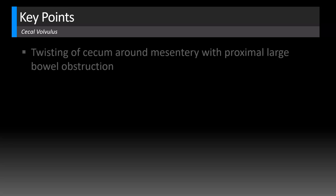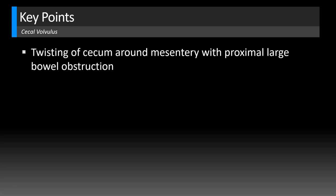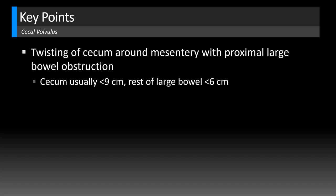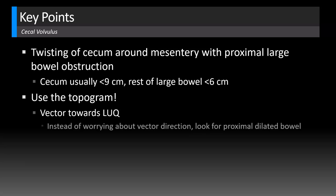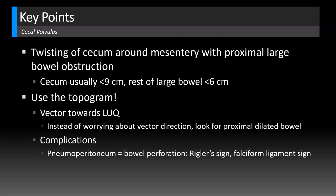Let's review the key points for cecal volvulus. It's a twisting of the cecum around the mesentery causing a proximal large bowel obstruction. Numbers to remember: the cecum is usually less than nine centimeters in diameter, whereas the rest of the colon is less than six centimeters — a cecum exceeding nine centimeters is suspicious for obstruction. Use the topogram; classically the vector points towards the left upper quadrant, but more importantly, look at what bowel is dilated proximally: if it's small bowel, it's likely cecal volvulus; if it's large bowel, it's likely sigmoid volvulus. Look for complications: pneumoperitoneum indicates bowel perforation — you'll see the Rigler sign and the falciform ligament sign; on upright X-ray you'll see subdiaphragmatic free air; the Rigler sign is particularly helpful for supine X-rays or topogram images. Also look for pneumatosis, which indicates cecal ischemia — gas within the bowel wall.